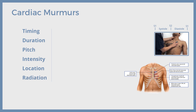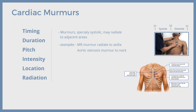Coming to the last feature — radiation of murmur. While murmurs are usually most intense at one specific listening post, they often radiate to other listening areas of the precordium. This is mainly a feature of systolic murmurs. These murmurs radiate in the direction of blood flow across the valve. For example, mitral regurgitation murmur radiates from the apex to the left axilla, aortic stenosis murmur radiates from the right second intercostal space to the neck, and VSD murmur from the left sternal border to the right side of the sternum.